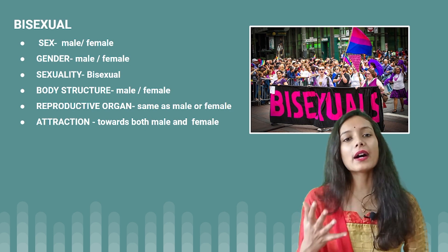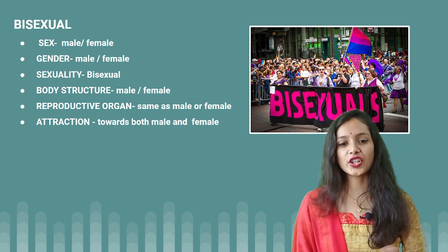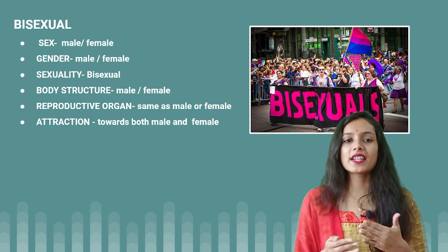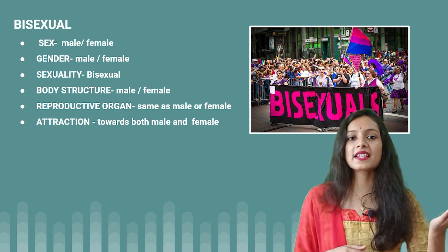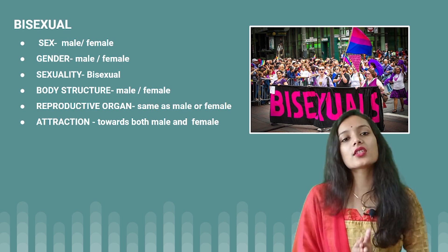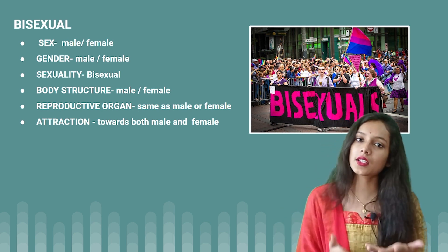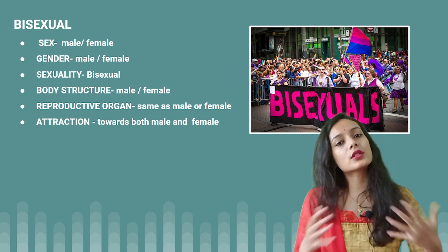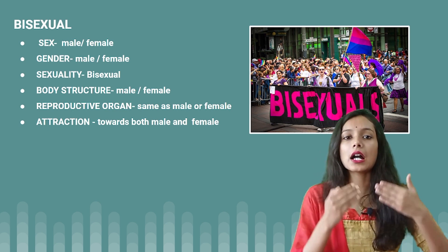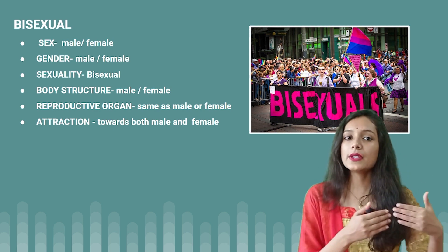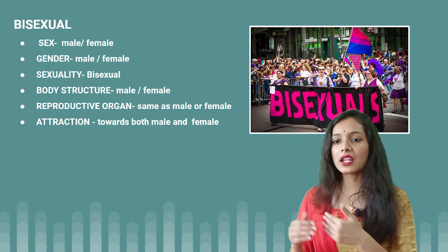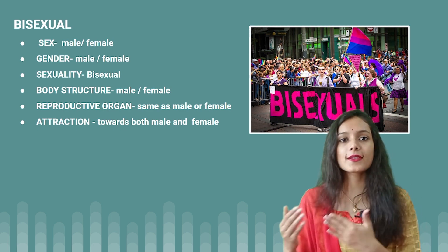Bisexuals can be male or female, with gender being male or female. Their sexuality means they are attracted to both sexes — they like both males and females. Body structure is a normal male or normal female, with the corresponding reproductive organs present. The attraction of bisexuals covers both male and female, so they can form either a male-male or male-female relationship, whatever they like. This is known as bisexual.